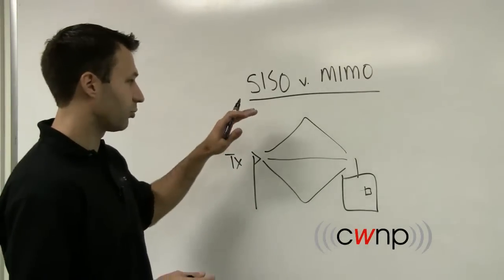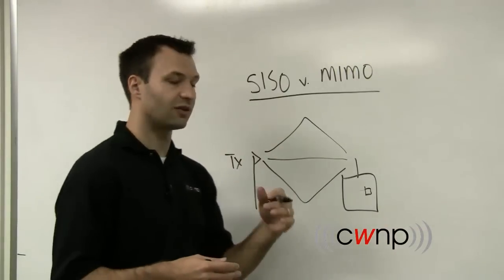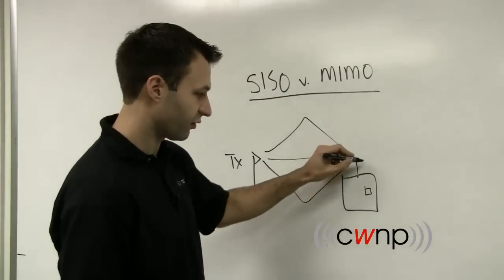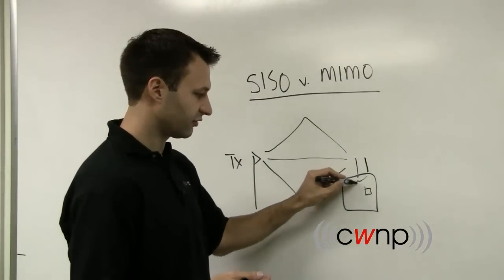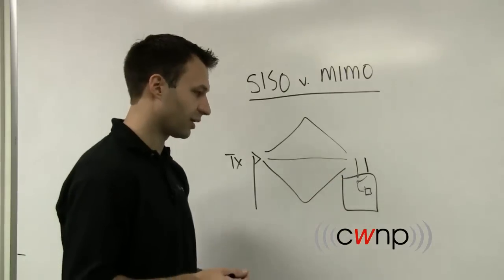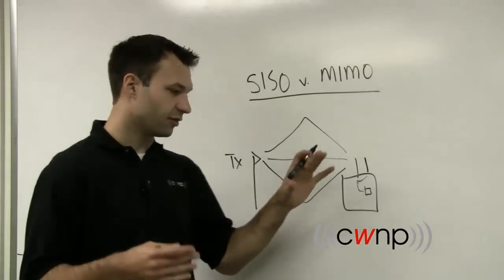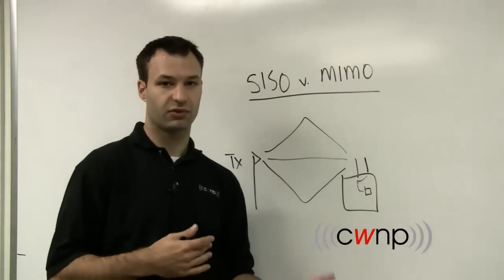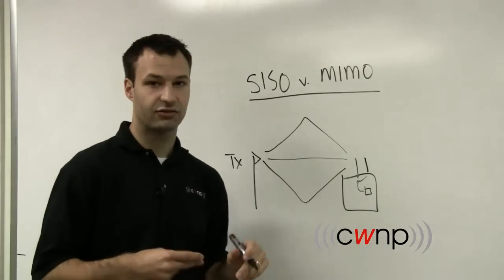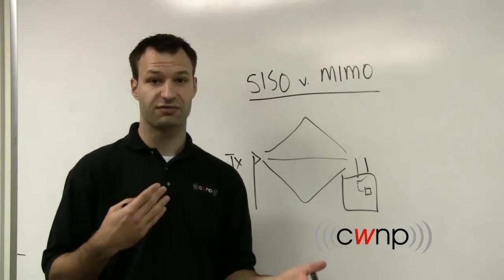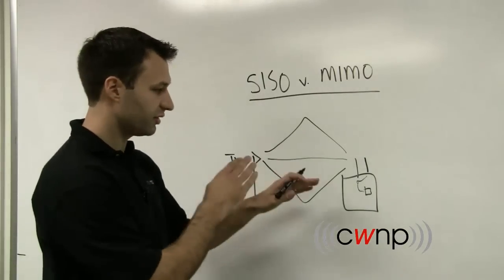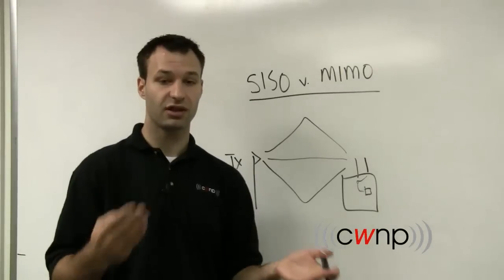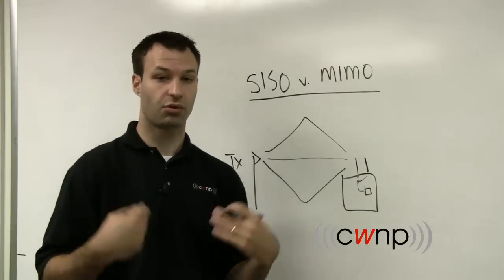So one of the original resolutions to single input, single output is something called antenna diversity. So we're still going to use single input, single output, but this antenna is also going to be connected down here to the radio. And though you can still only transmit and receive with one of these two antennas, you at least have some backup and diversity in your RF sampling. So both of these antennas are going to receive the same signal and the better one will be processed.